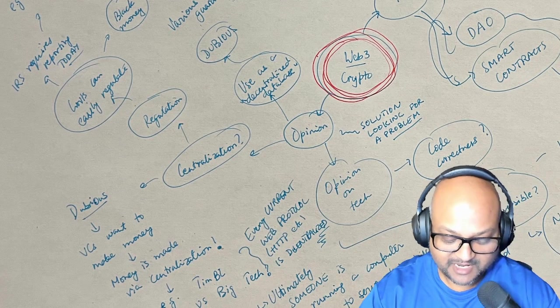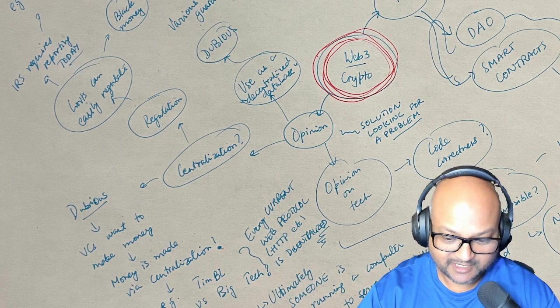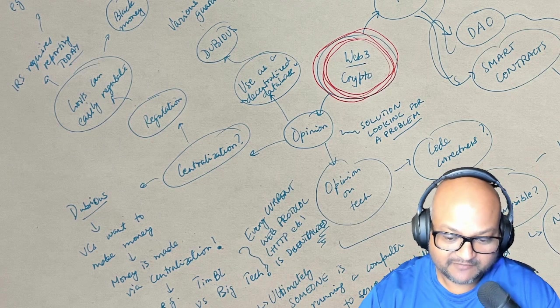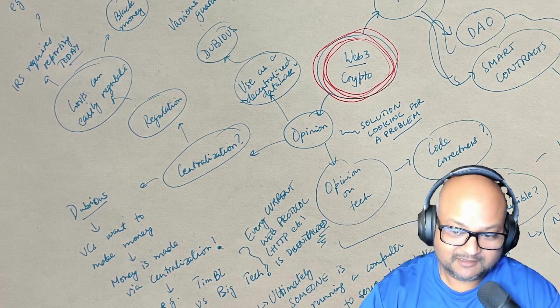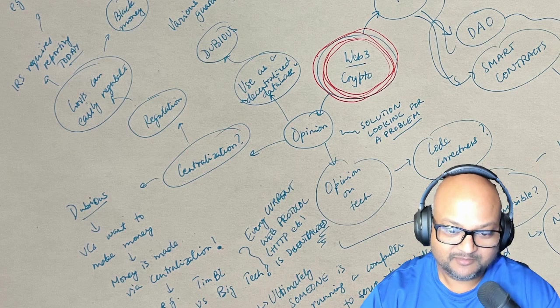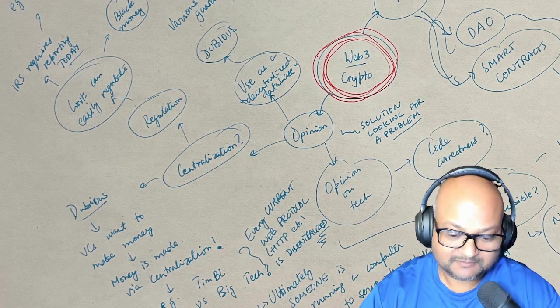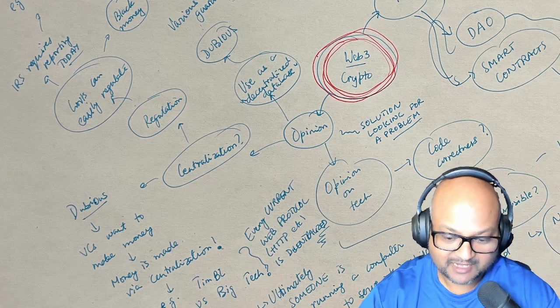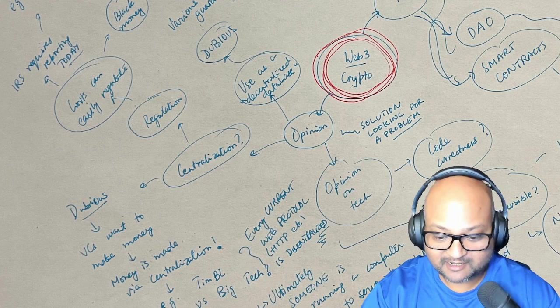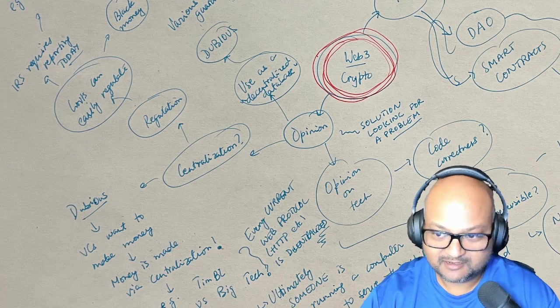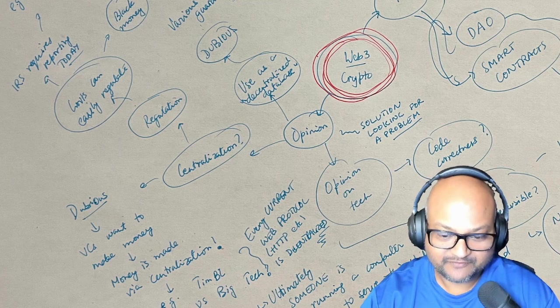But there is one more thing which makes this claim of decentralization somewhat dubious, which is the flood of venture capital money that is entering this space. If VCs are investing money in this space, obviously they want to make a return on it. And money is usually made via centralization. Money is made by building platforms. Money is made by having a choke point or a funnel point where you can extract some fraction of the value that is flowing through the system. So that in itself is a very strong incentive for the financial structures underlying this VC rush to favor centralization.